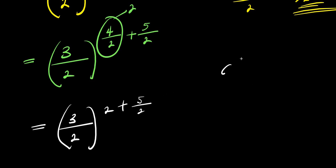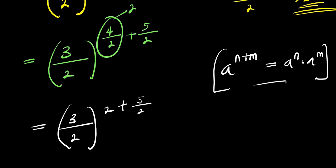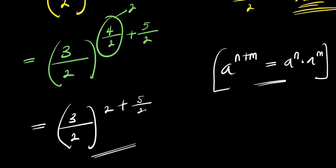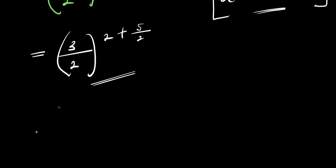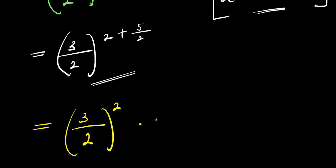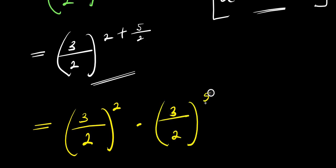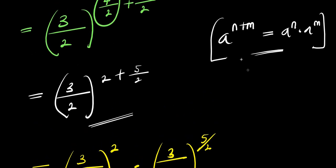Now, if you have a raised to the power of m plus n, this equals a to the power of m times a to the power of n. So we apply this right here — that means we are simply going to have 3 divided by 2, raised to the power of 2, times 3 divided by 2, raised to the power of 5 over 2, making use of this particular identity.